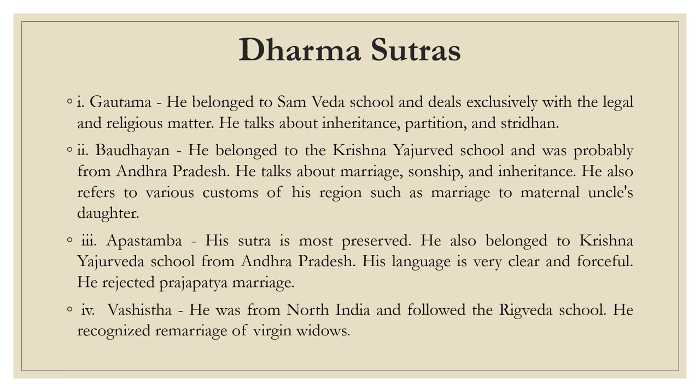The fourth is Vashisht. He was from North India and followed the Rigved school. He recognized remarriage of virgin widows. Basically, some of the dharmasutra authors are persons from various and different schools all over India who tried to teach a better and more useful way of living life, which includes inheritance, partitions, stridhana, marriages, and even the remarriage of virgin widows at that particular time.